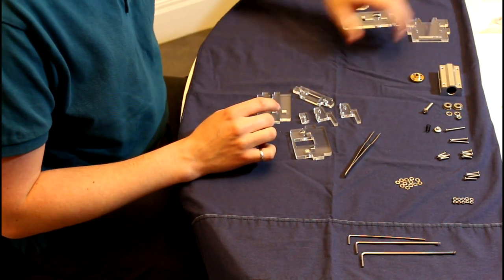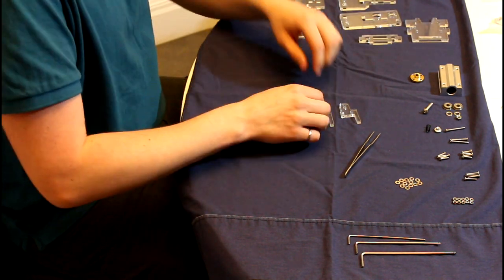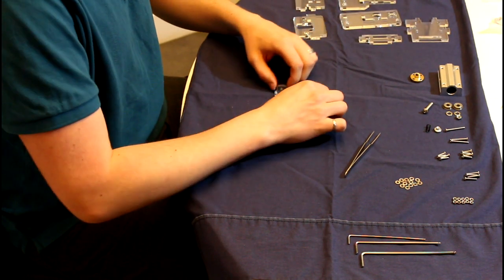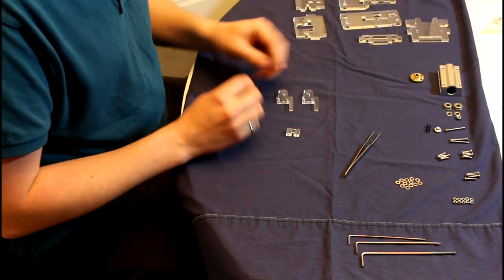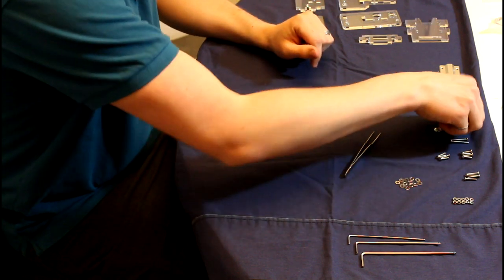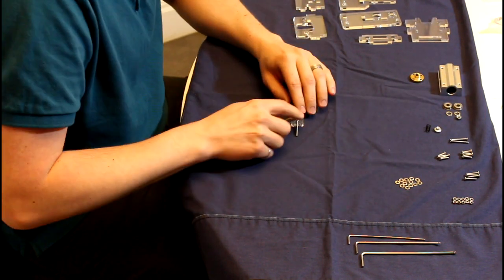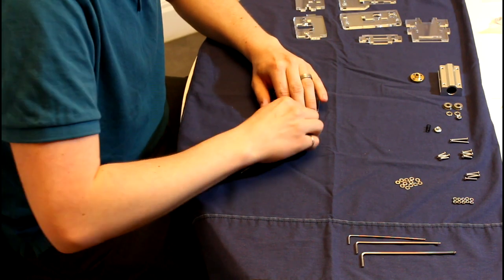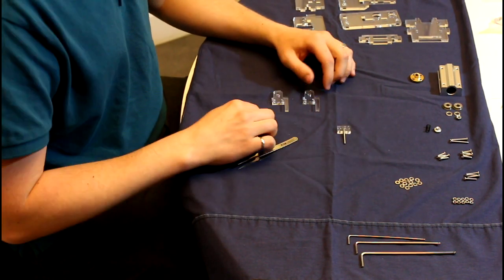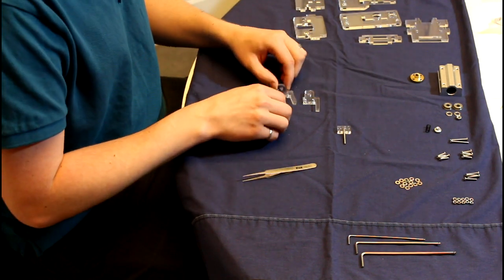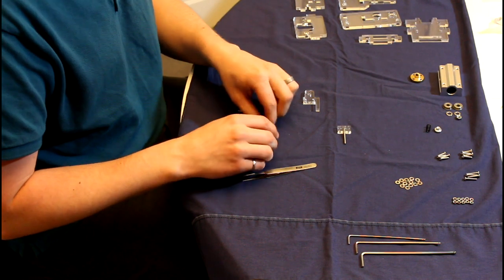So the first part of this step is to build the tensioner for the X axis idler. So what we need here are three acrylic parts, one M3 by 30 millimeter screw, which you push in here, and it's a tight fit so it doesn't slip out, and then you need the M5 by 25 millimeter screw, and then two M3 by 25 millimeter screws.